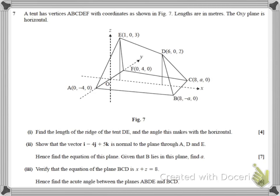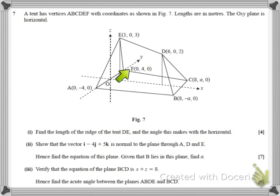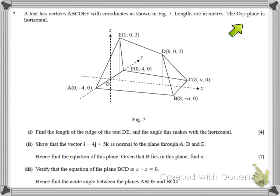This is a fairly typical C4 section B question on vectors. It's about a tent, so if you've been camping before it would help to actually imagine a tent and then you might be able to picture what's going on a little bit more clearly. We've got lengths in metres and the OXY plane is horizontal.